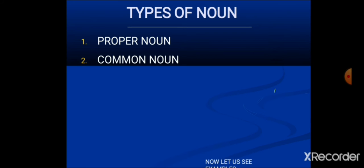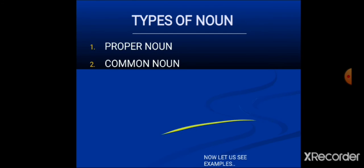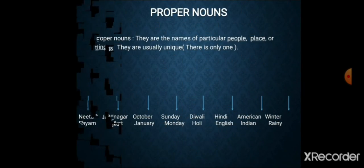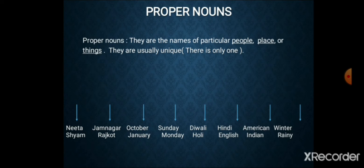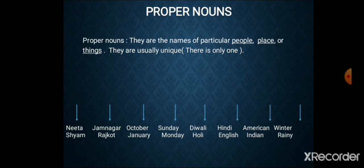Now we will learn about the types of noun. There are mostly two types of noun: proper noun and common noun. First, we will talk about the proper noun. Proper nouns are the names of a particular place, people, or thing. They are usually unique — there is only one. Whenever we talk about a proper noun, we talk about a particular name of a person, place, or thing where no other person, place, or thing has the same name.